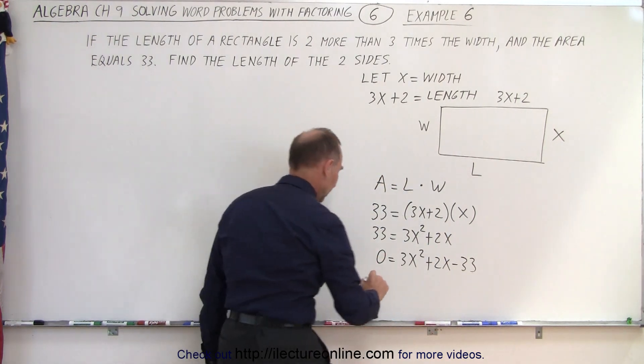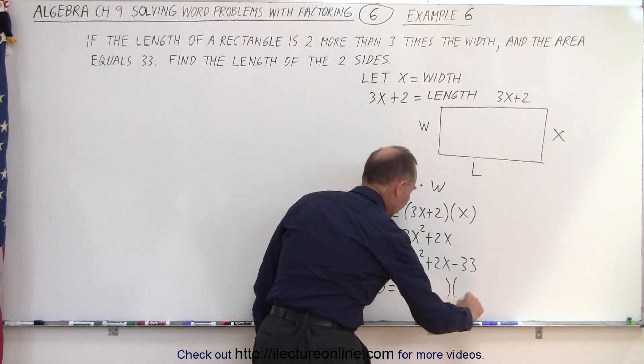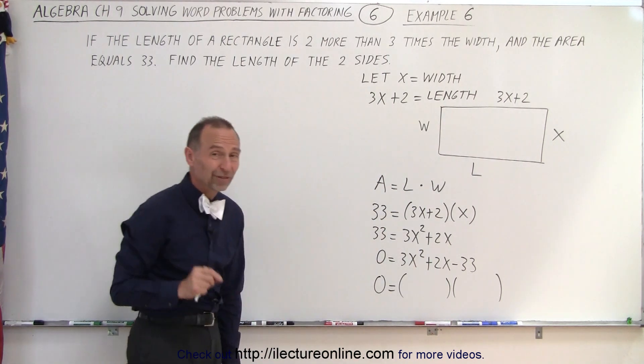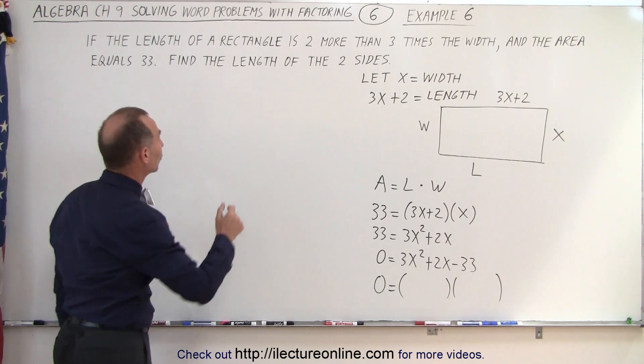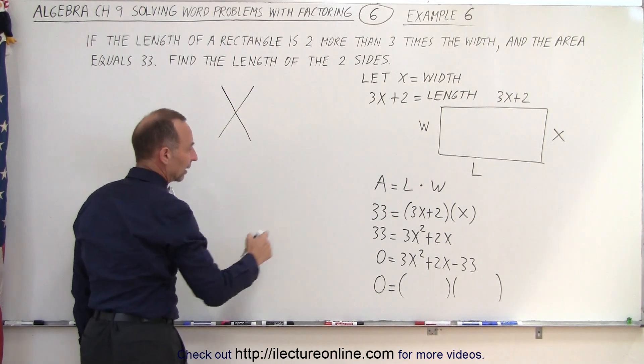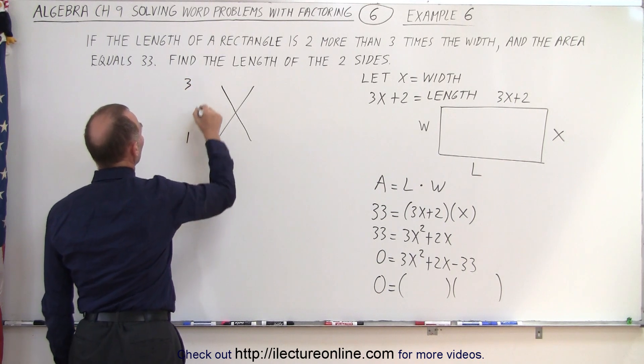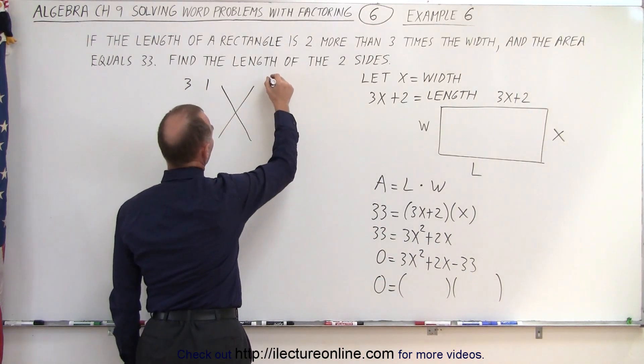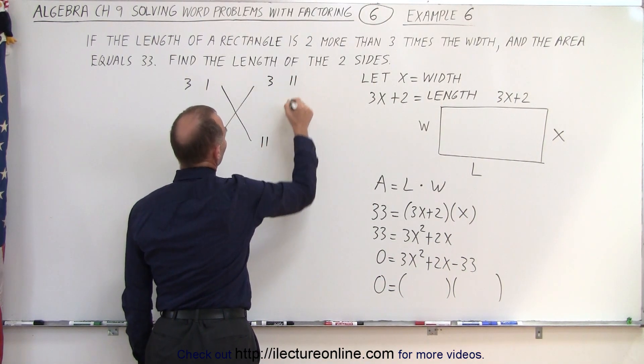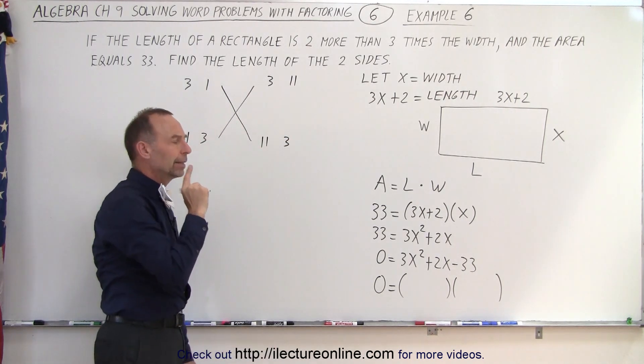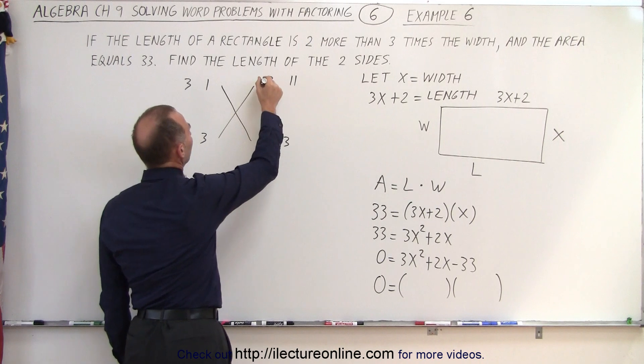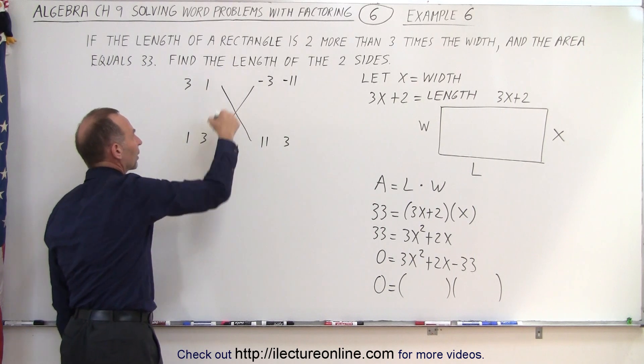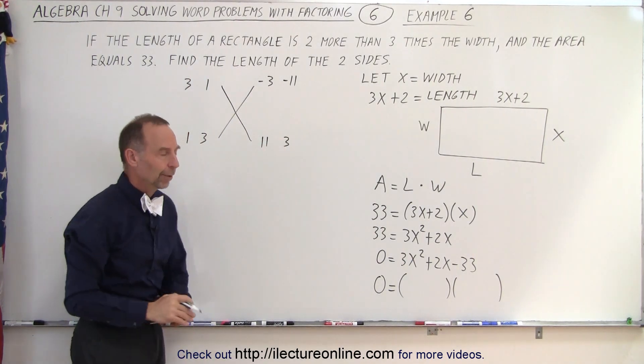And now we have to factor that. So we get zero is equal to the product of two binomials. Now, since the numerical coefficient in front of the x squared term is not equal to one, we may want to use the FOIL method. And to get three, that can either be three times one or one times three. And to get 33, that can be gotten by having three times eleven or eleven times three. There's a negative sign there, so one must be negative.